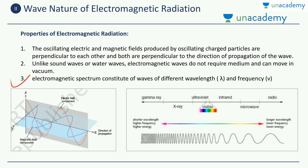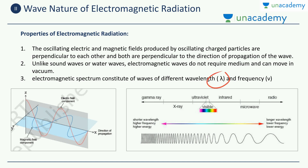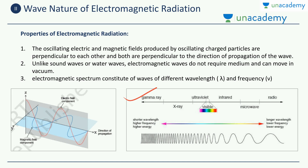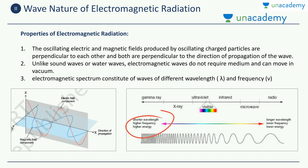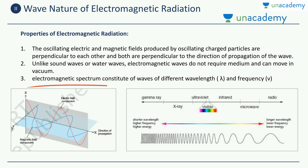The third property is the electromagnetic spectrum, which constitutes waves of different wavelengths and frequencies. You can see the spectrum here — it ranges from gamma rays on one end to radio waves on the other. On the gamma ray side, there are shorter wavelengths and high frequency; on the radio wave side, there are longer wavelengths and lower frequency. Wavelength is denoted by the letter lambda and frequency is denoted by the letter nu.